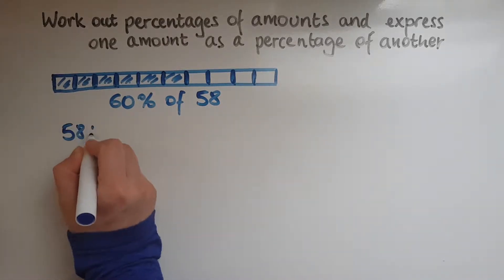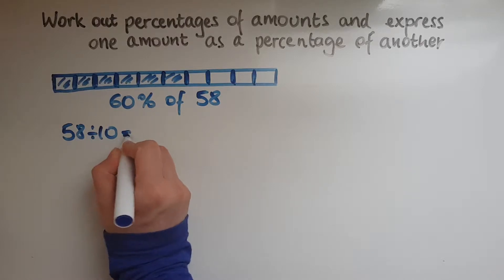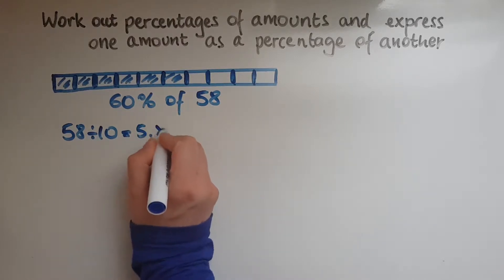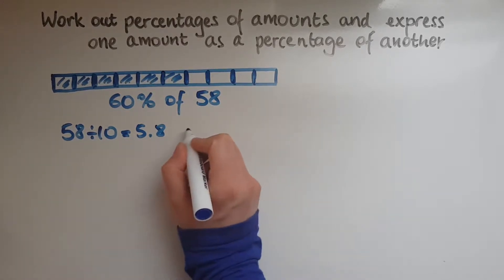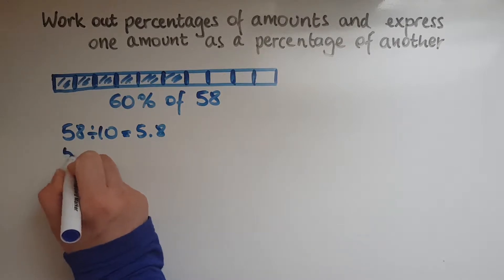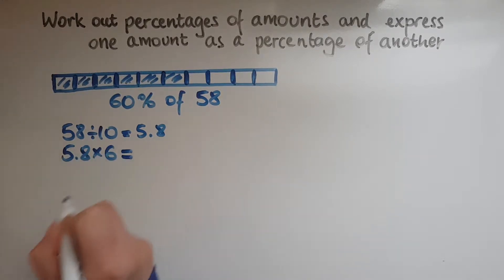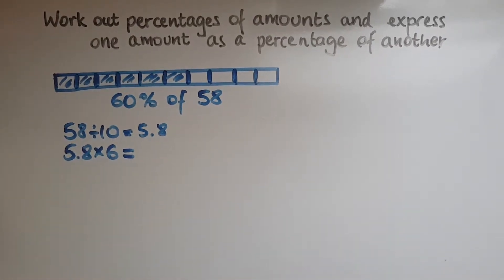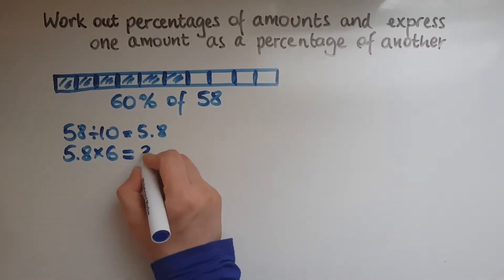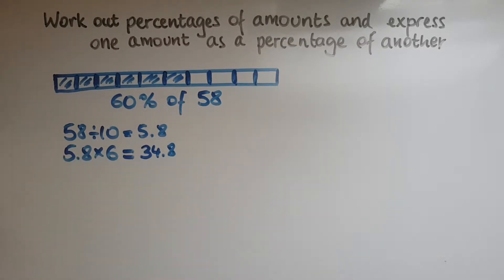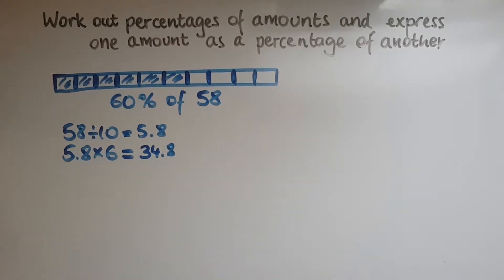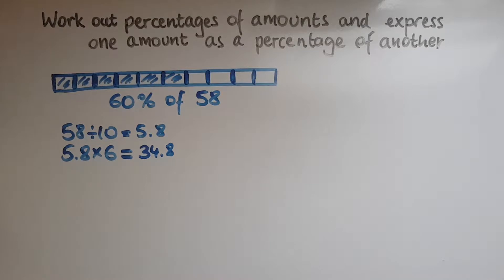So 58 divided by 10, which would give us 5.8, and then multiply 5.8 by 6, which is 34.8. So that is 60% of 58. This is one way of working out.